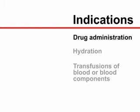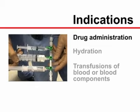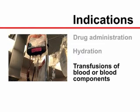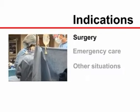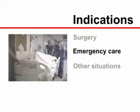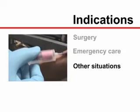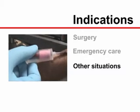Peripheral intravenous catheterization is required in a broad range of clinical applications, including intravenous drug administration, intravenous hydration, transfusions of blood or blood components, during surgery, during emergency care, and in other situations in which direct access to the bloodstream is needed.